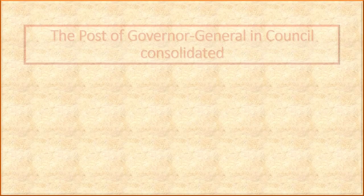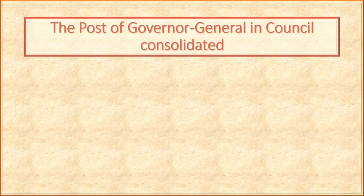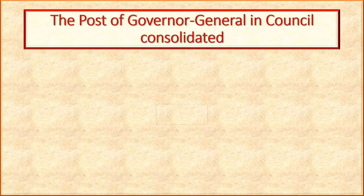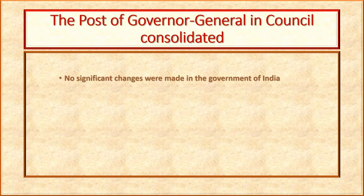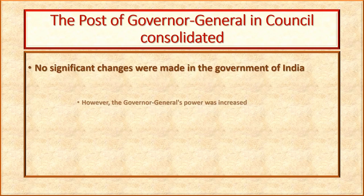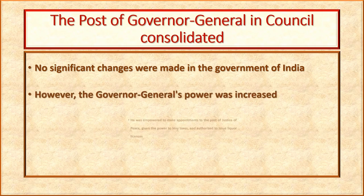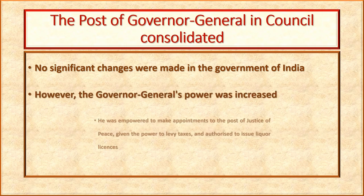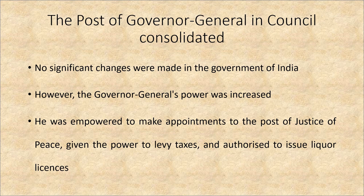Point five: The post of Governor-General in Council consolidated. No significant changes were made in the government of India. However, the Governor-General's power was increased. He was empowered to make appointments to the post of Justice of Peace, given the power to levy taxes, and authorized to issue liquor licenses.